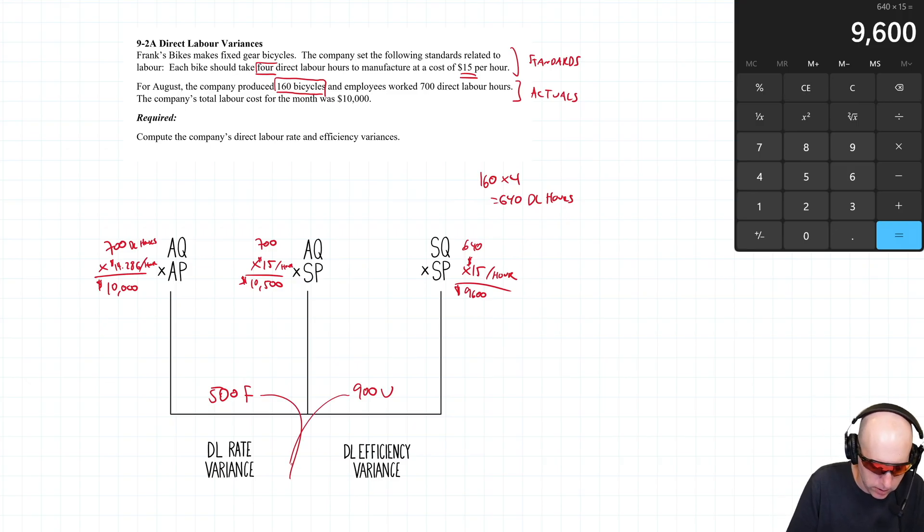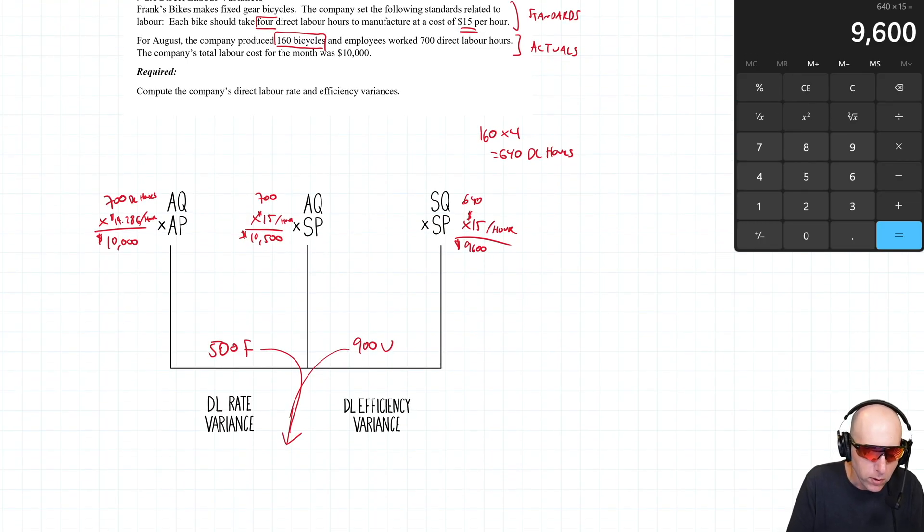We were unfavorable as far as efficiency goes. That's possible, but you wouldn't know unless you actually managed the company what the real cause was. Overall, you take the big one minus the small one: 900 - 500 = 400. If they're both favorable, you'd add them together. In this case, we had one unfavorable, one favorable. Take the big one minus the small one: $400 unfavorable as our overall labor variance.